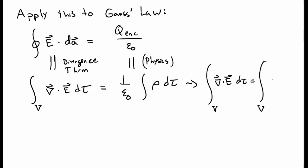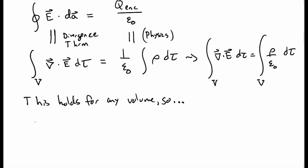and that must be equal to rho over epsilon naught, integral over dτ. And this must be true for any volume. So if this is true for any particular volume that I choose, the things inside of the integral must also be equal. So I must have the divergence of E is equal to rho over epsilon naught.